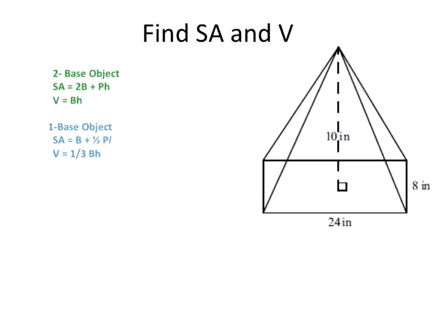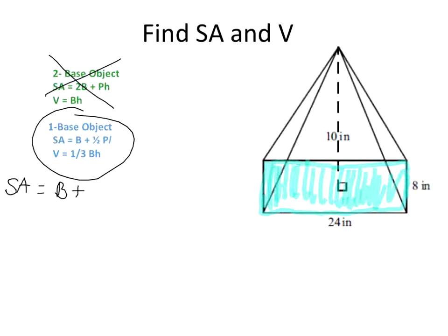Okay, so here we go. Find surface area and volume. So let's identify which formulas we're going to be using. This time I have a one-based object. I just have the square at the bottom, so that's going to be considered my base. So let's try plugging in our formulas and see what we know. Surface area equals big B plus one-half PL. So big B, area of the base, that would just be 24 times 8, right? Because it's a rectangle. So I'm just going to put in 24 times 8. I'm going to drop down that one-half. Perimeter of the base. That's also easy, right? We add all four sides. So 24 plus 8 and another 24 plus 8 because I have to go all the way around my rectangle.